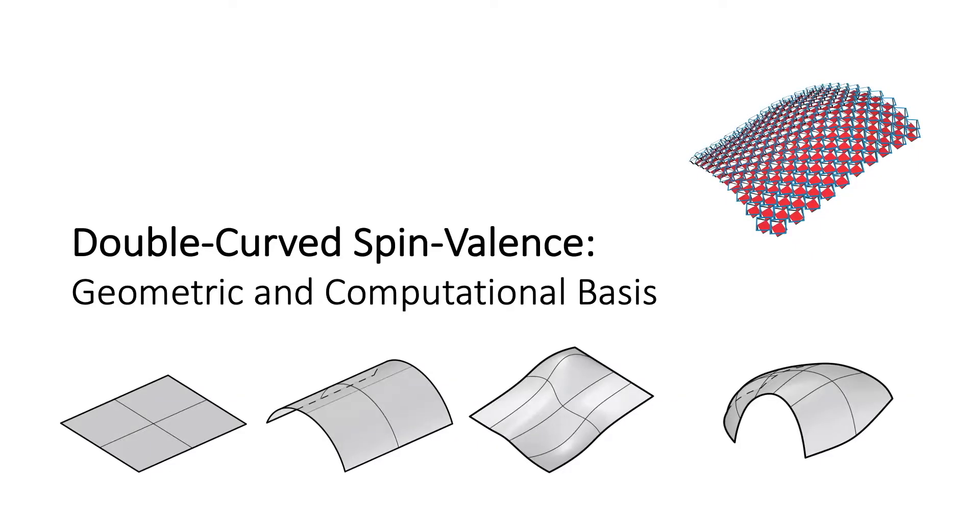The goal of the paper is to describe the method that we used to translate the spin valence system into a computational controllable system that would be able to take double curve surfaces as an input target surface and work in the same way that it does when it's in flat or single curved configurations.